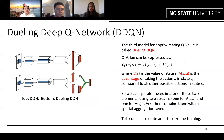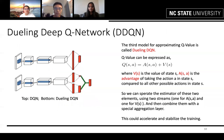The third model is called Dueling DQN. We note that the Q value can be decomposed into two terms: V and A, where V is the value of state S, and A is the advantage of taking action A in state S compared to all other possible actions. We separate the estimators of these two elements using two streams and then combine them with a special aggregation layer, which accelerates and stabilizes training.